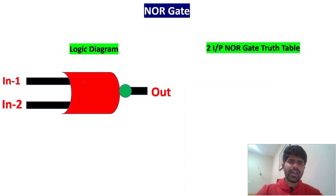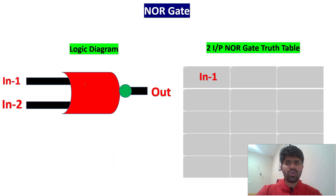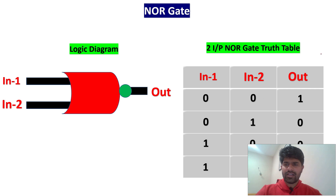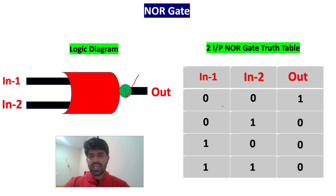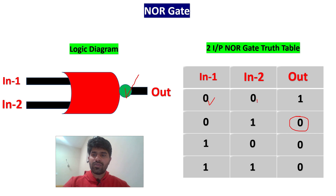NOR gate is just the opposite of OR gate. The only difference is one NOT gate. In the OR gate, if any one input is one then output will be one. But here, if both inputs are zero then output will be one.